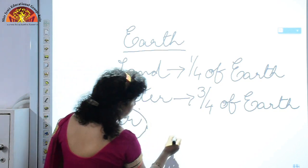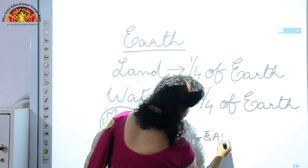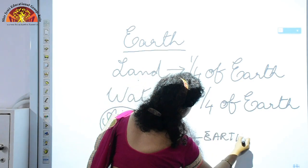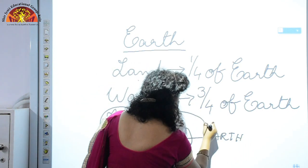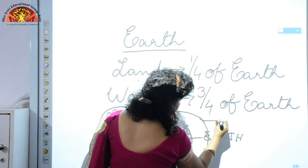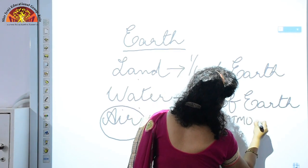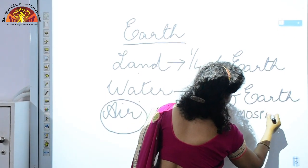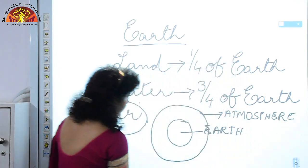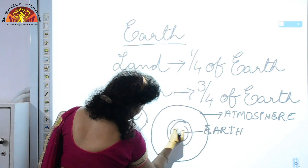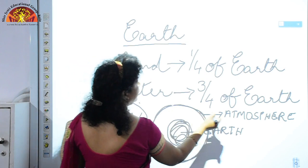Where do you find air? The Earth has a layer of air around it, and this layer of air surrounding the Earth is called the atmosphere.